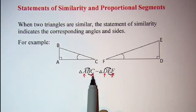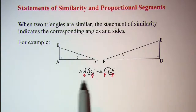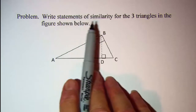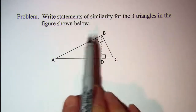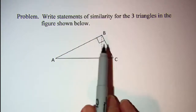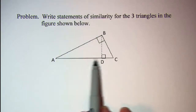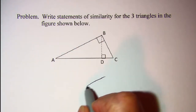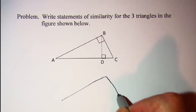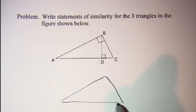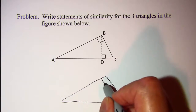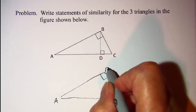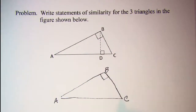It's helpful to be able to read the similarity statement, so let's look at a problem. We're asked to write statements of similarity for the three triangles in the figure below. We have one big right triangle — triangle ABC.